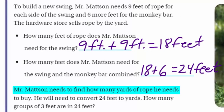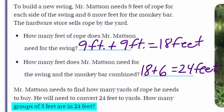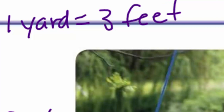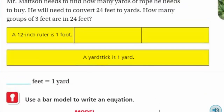Mr. Mattson needs to find how many yards of rope he needs to buy. He will need to convert 24 feet to yards. It's important to know that one yard is equal to three feet — let's write that up at the top. A 12-inch ruler is one foot, and a yardstick is equal to one yard, which is three feet. So we're looking at groups of three feet.